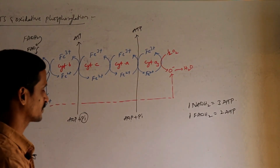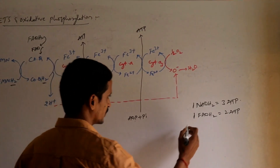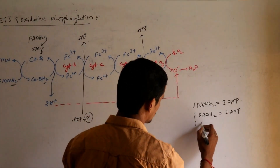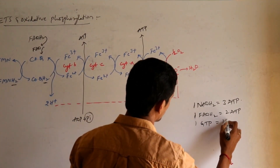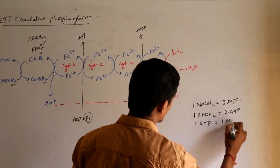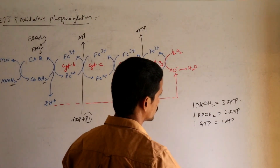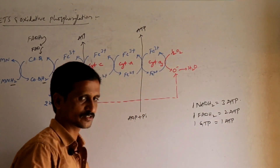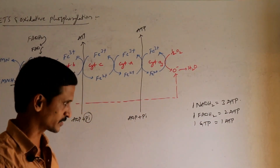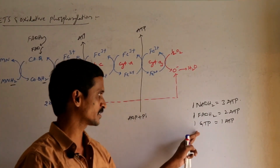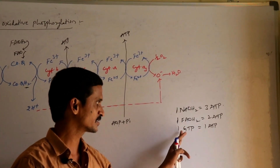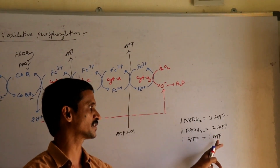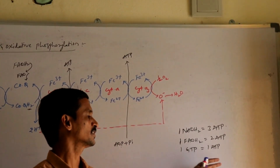Along with this, we got 1 GTP. 1 GTP will produce 1 ATP due to transphosphorylation — because of transphosphorylation, GTP is simply converted into ATP.